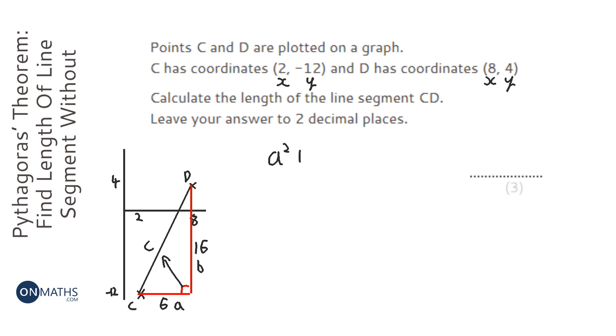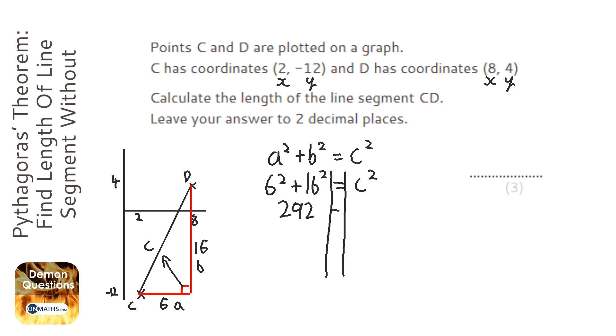So Pythagoras says A squared plus B squared equals C squared. And we're going to substitute them in. So 6 squared plus 16 squared equals C squared. And I'm just going to type that straight into the calculator. So I'm going to type in 6 squared plus 16 squared.